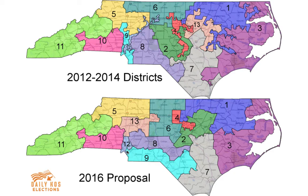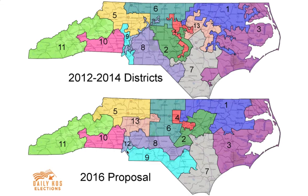There are still some gerrymandered districts today. In fact, North Carolina A&T is located in one of the most gerrymandered districts — some of their dorm rooms on one side of the street are in one district, and some on the other side are in a completely different district, which divides the vote of that college campus. Gerrymandering is still very alive and well — it's just a matter of whether people will file lawsuits to end it.